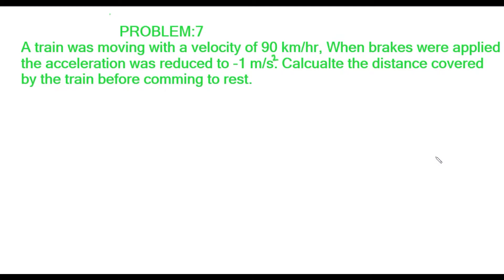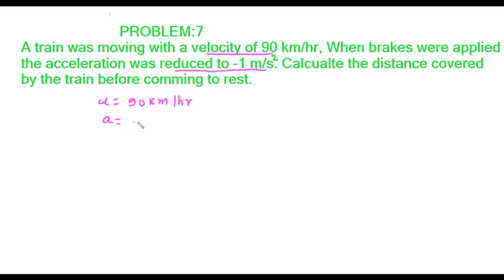In this problem, the train's moving velocity is the initial velocity. U is given as 90 km per hour. When brakes were applied, the acceleration is given as minus 1 meter per square second. We have to find the distance covered by the train before coming to rest.